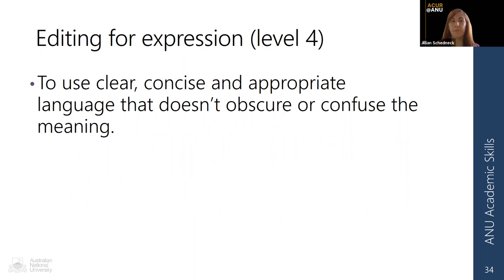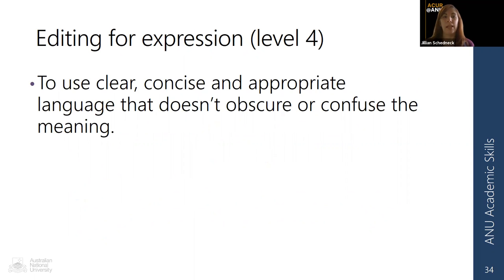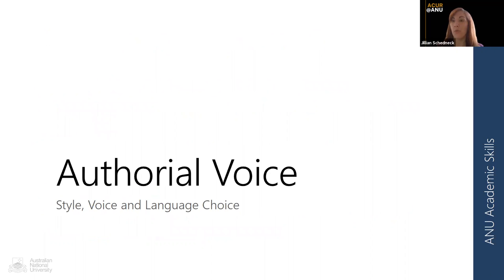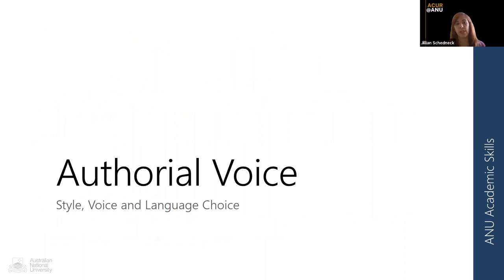When editing for expression, think about how you've best used clear, concise, appropriate language without obscuring or confusing meaning. Find any emotive or informal language, unclear pronouns, and fix them with clearer, more precise word choice using concrete nouns instead. Thinking about voice — not just 'is this grammar correct, have I used the right word?' — but how your language choice affects your authorial voice and style. As linguist Ken Hyland has said: academic writing is not just about conveying your content, it's about representing yourself to gain credibility by projecting your identity.